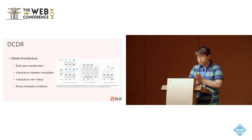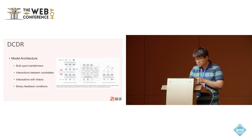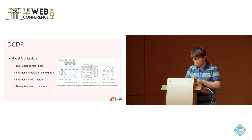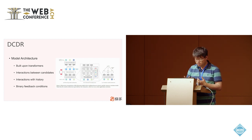Regarding model architecture, both the generation model and the sequence evaluator are built upon transformers. During the generation stage, user feedback is introduced as conditions, so we use user feedback as input to the DCDR generation model. The model considers both interactions among candidates and interactions with the user history. For simplicity, we use binary feedback conditions.